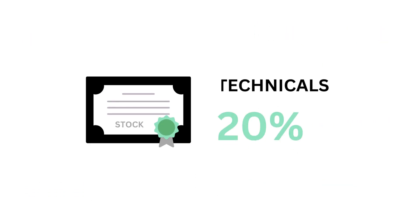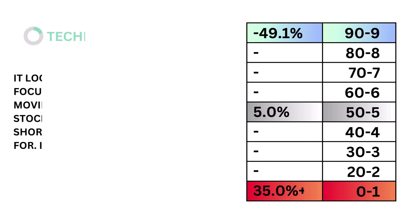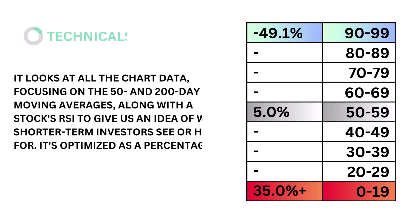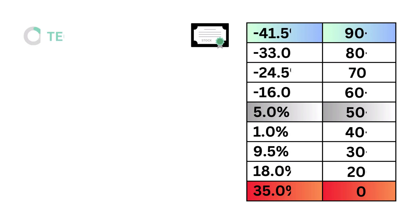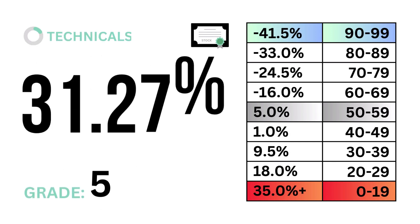Third, technicals, which accounts for 20% of the stock factor. Technicals looks at all the chart data, focusing on the 50 and 200-day moving averages along with the stock's RSI, to give us an idea of what shorter-term investors see or hope for. It's optimized as a percentage. The models tell us that a technical rate of 5% is considered average. Here's our technical rate and technical grade.